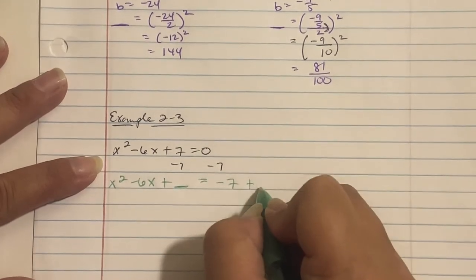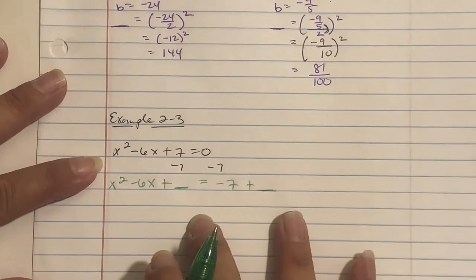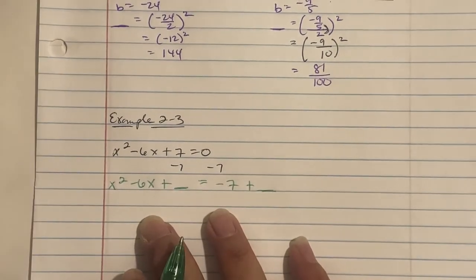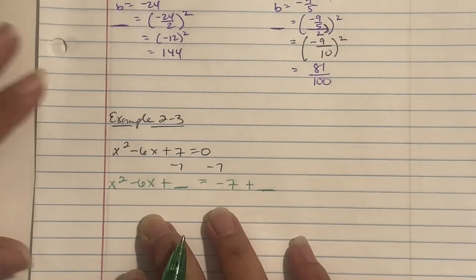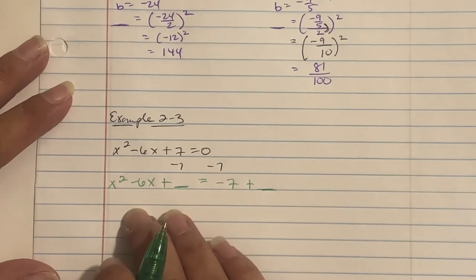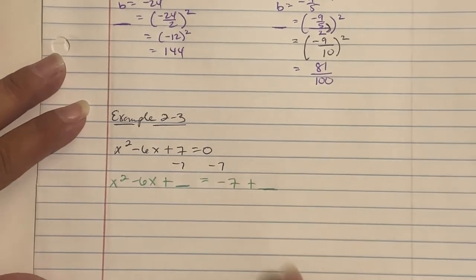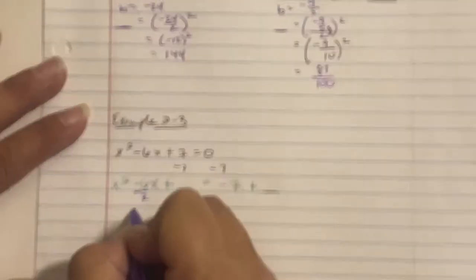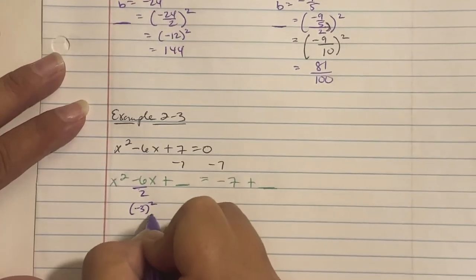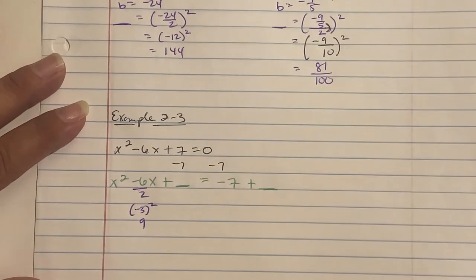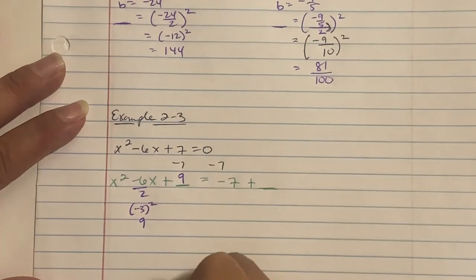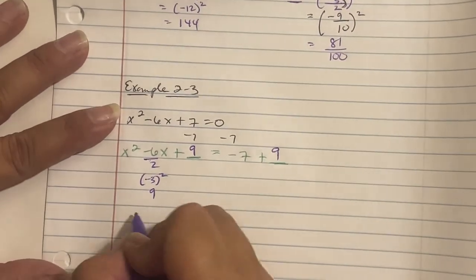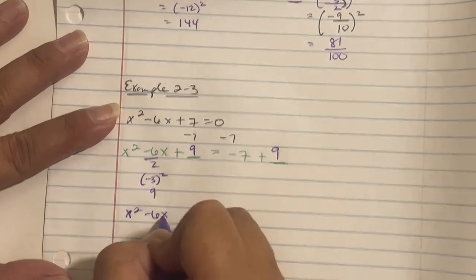Think of a plane or a boat — you need to make sure everything is balanced and equal. Whatever you do to the left side of an equation, you must do to the right side. So now we do 6 divided by 2, which gives negative 3 squared, which is 9. I'm going to add 9 to the left and add 9 to the right. So now we have x squared minus 6x plus 9 equals 2.